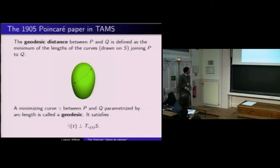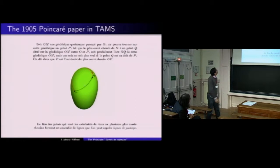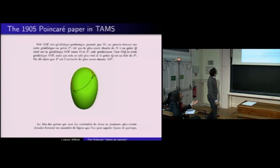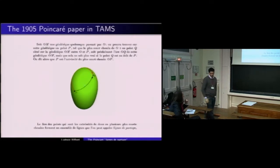Ayant défini la distance géodésique, on va pouvoir définir ce que Poincaré appelle les lignes de partage. Poincaré dit : soit OM une géodésique quelconque passant par O — on pourra trouver sur cette géodésique un point P à partir duquel la géodésique ne sera plus minimisante.